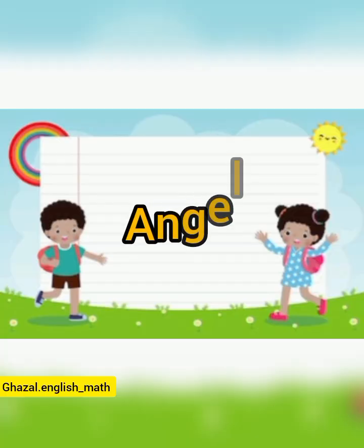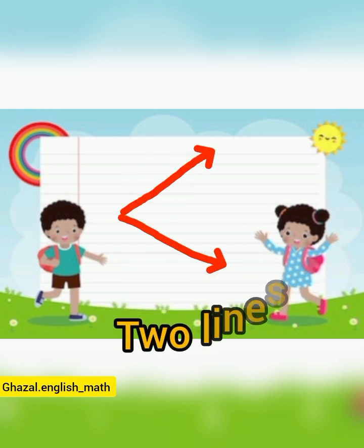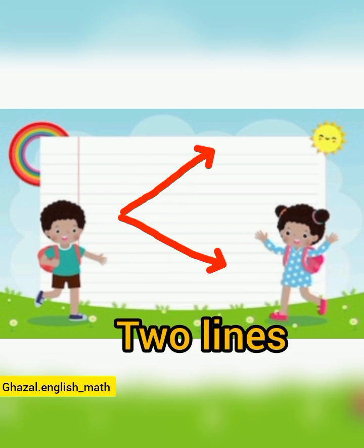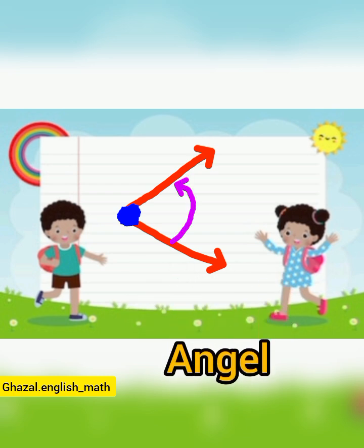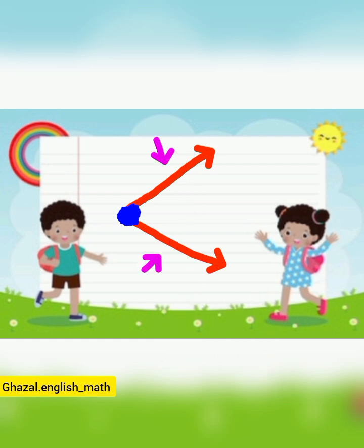One of the students raised her hand and answered: I know the correct answer. She continued her explanation with the definition of an angle — two lines which meet each other at a certain point. That certain point is called the vertex, and the distance between two lines is the angle. Each angle has two arms.